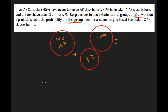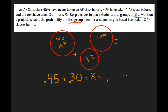What you have to think about is that 45% have taken no AP classes, plus the 30% who have taken one AP class, plus the unknown amount who have taken two or more classes, should all add up to one. Solving that quickly, 75% are in the first two groups, which means 25% have taken two or more.